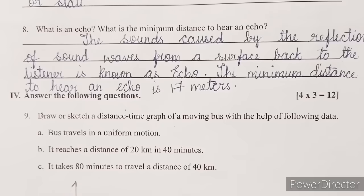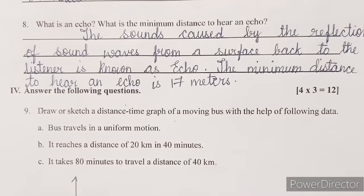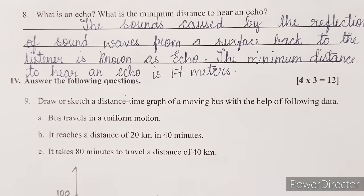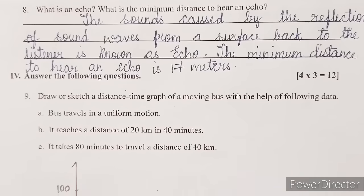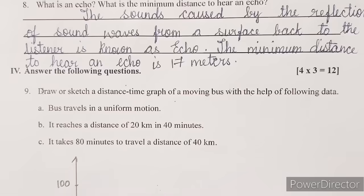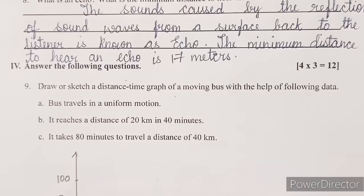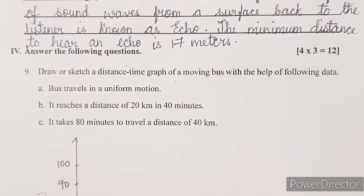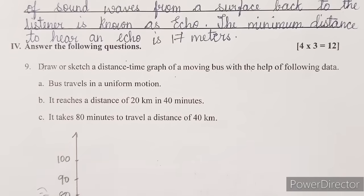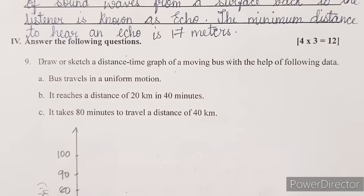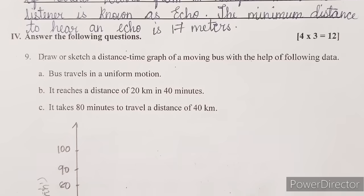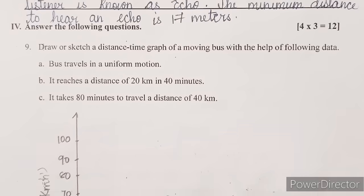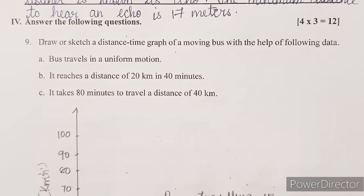Next question, question number eight: what is an echo? What is the minimum distance to hear an echo? Answer: the sound caused by the reflection of sound waves from a surface back to the listener is known as echo. The minimum distance to hear an echo is 17 metres.